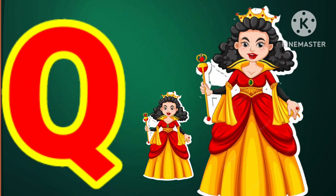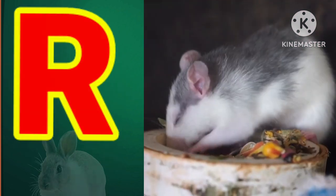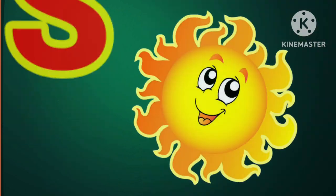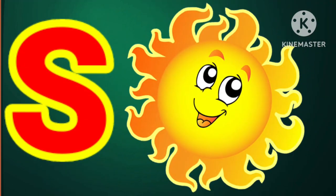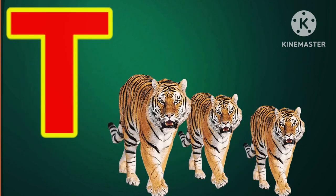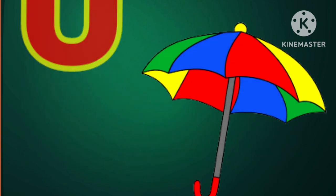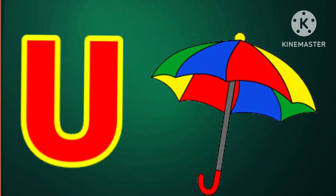Q for queen, R for rabbit, S for sun, T for tiger, U for umbrella.